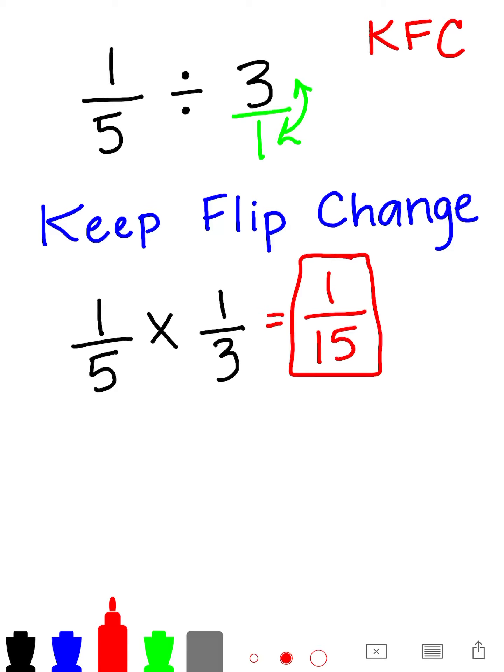There are three more problems on this paper. I do want to point out that number 4 says, Brandy solved 1 sixth divided by 5 by using a related multiplication expression. What multiplication expression did she use? So you're not exactly going to solve it. If you do, that's fine. But I'm looking more for the problem change to multiplication, and your students should know what that means because we've talked about this in class.